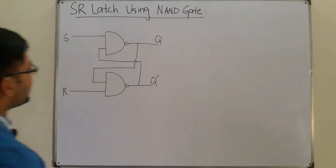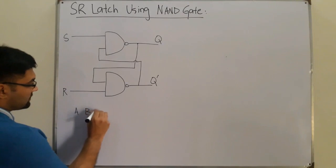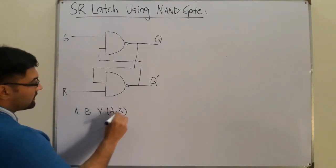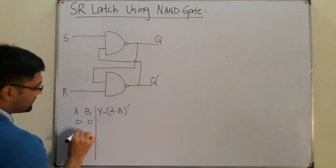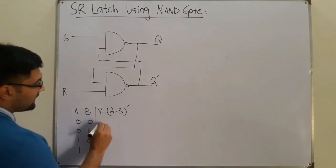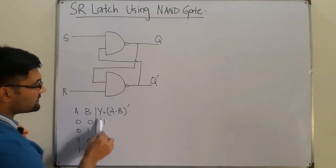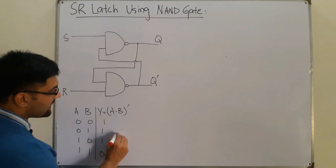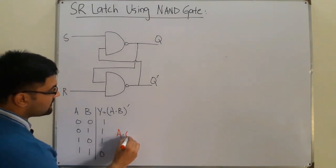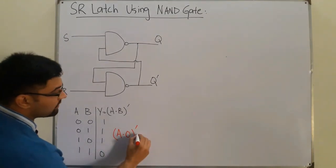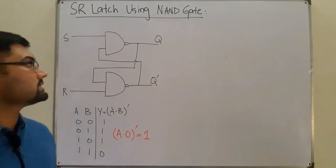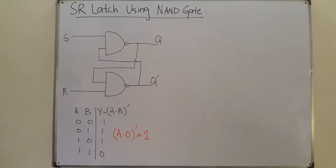We're using the NAND gate, so let me draw the truth table for it. A NAND B is the whole complement. The inputs are 0-0, 0-1, 1-0, and 1-1, and the outputs are 1, 1, 1, and 0. The most important property we will be using is: anything NANDed with 0 is equal to 1.